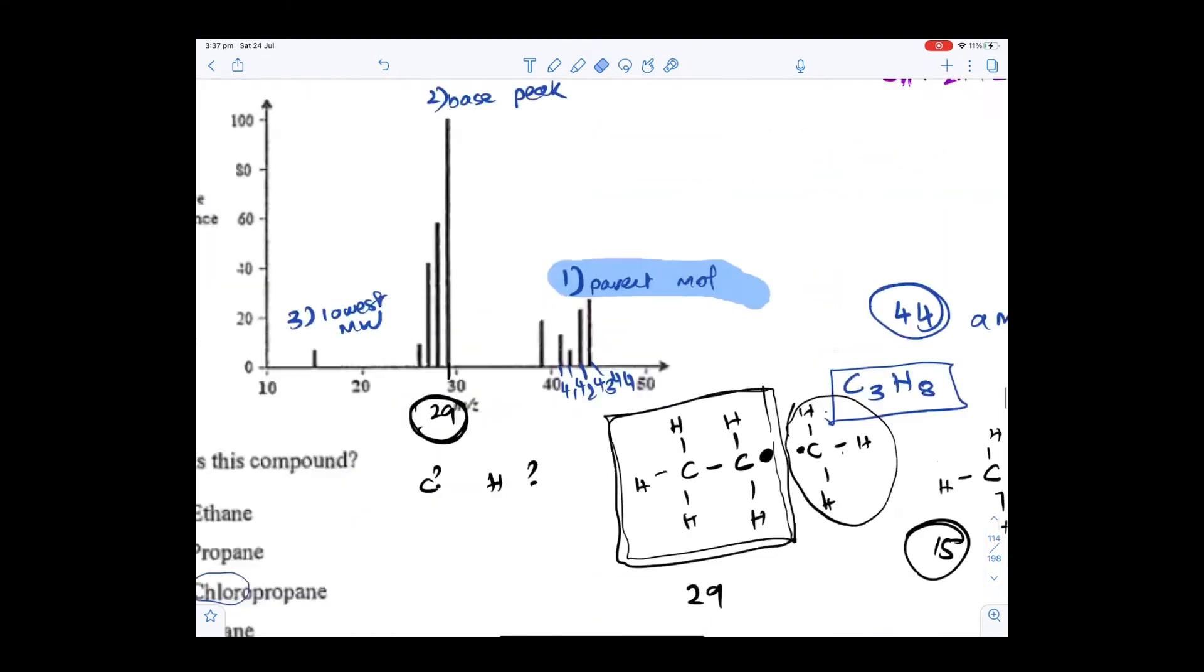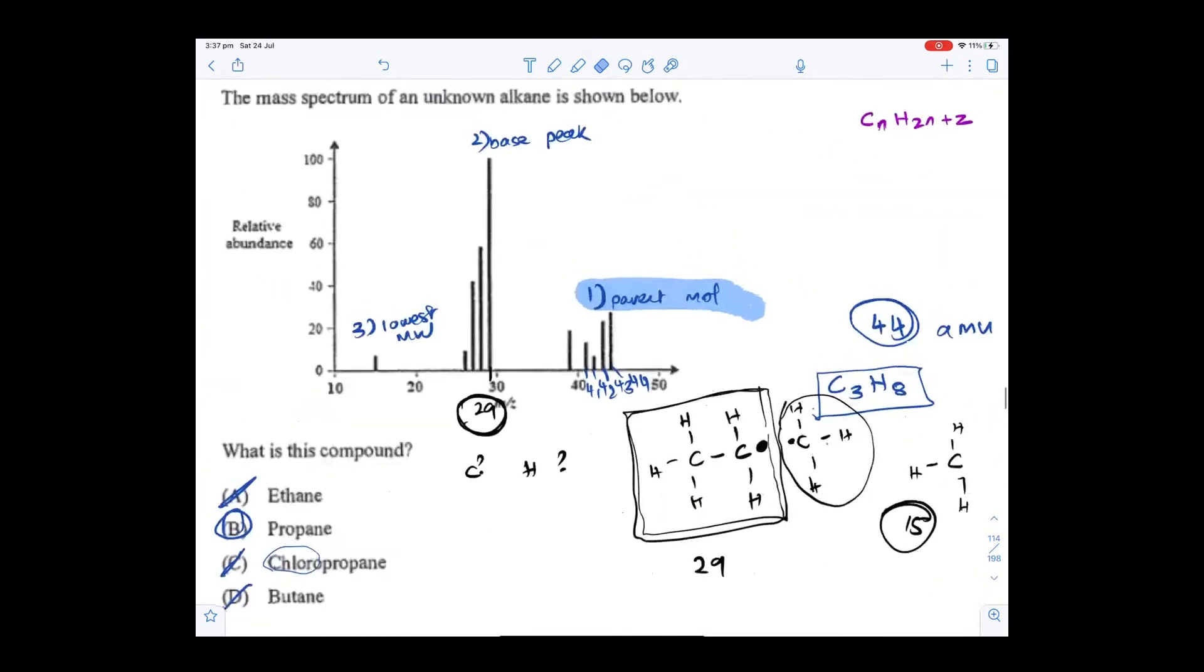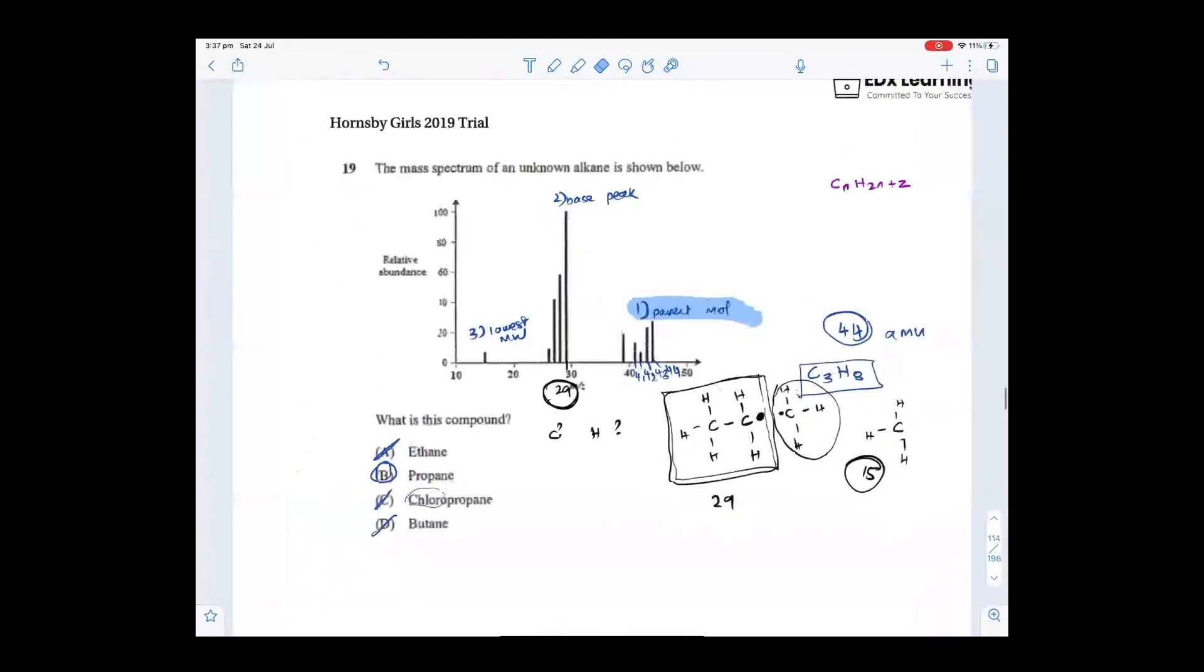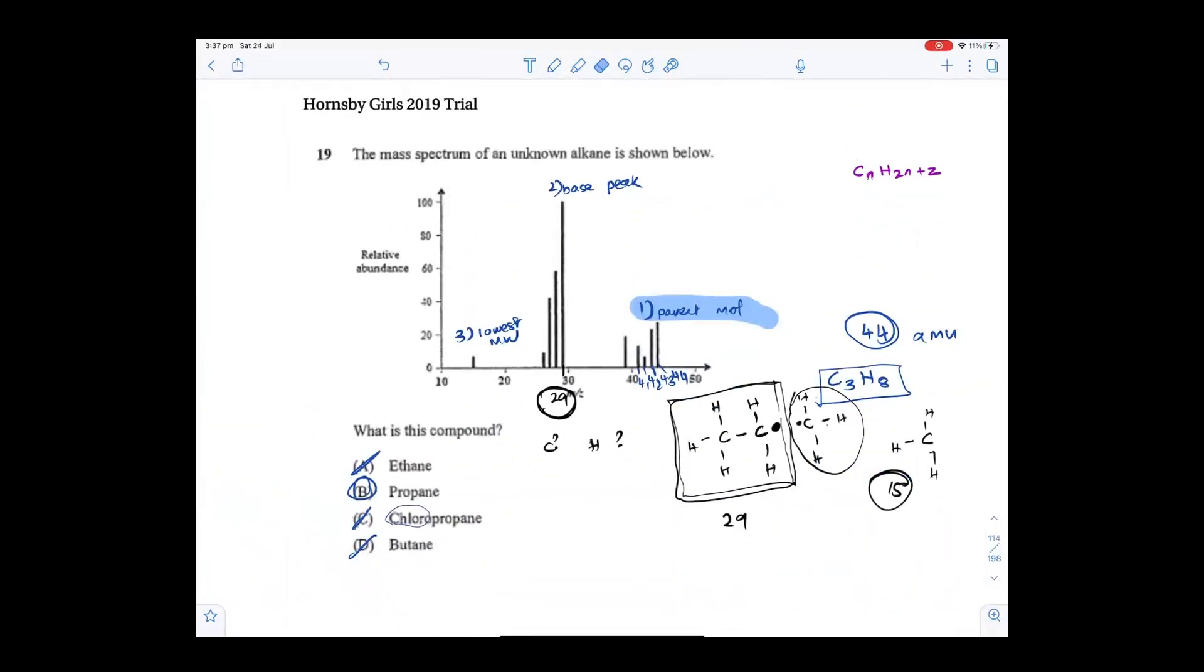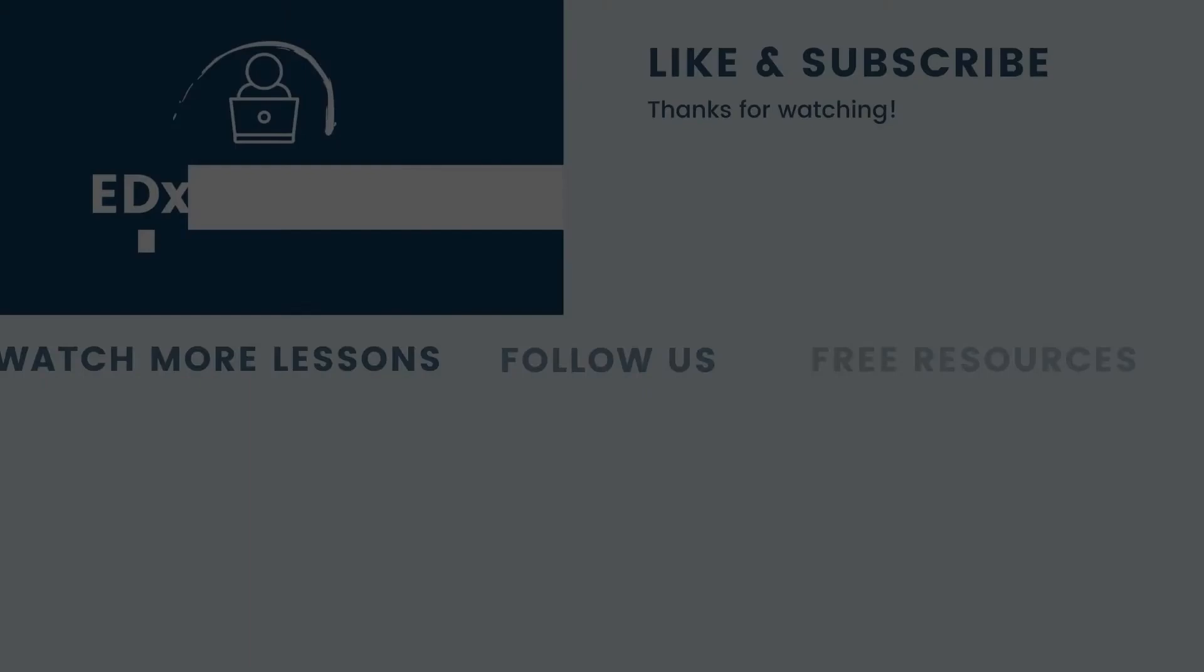So you just have to know the generalized formula and then start guessing carbons and hydrogens. That's how easy mass spec is. All right everyone, we'll stop it there. Tomorrow, next lesson, NMR, okay?